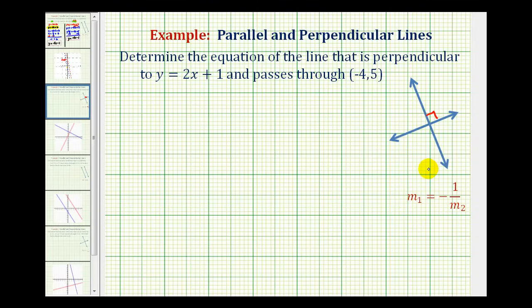This notation can be a little bit confusing. So for example, if this first line had a slope of, let's say, 2 fifths, then the slope of the second line would have to be the negative reciprocal, meaning we'll flip this over and change the sign. So it's going to be negative 5 halves.